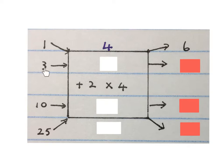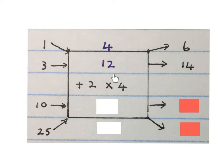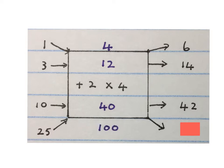Then we take the 3. BODMAS says we times first: 3 times 4 gives us 12, and then 12 plus 2 gives us 14. Next we take the 10 — we have to plus 2 and times 4, but we first go to times 4: 10 times 4 is 40, and then 40 plus 2 gives us the answer: 42. Last one: 25 times 4 gives us 100, and 100 plus 2 gives us 102.